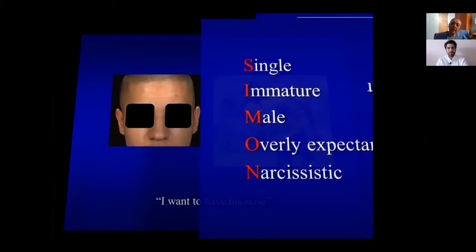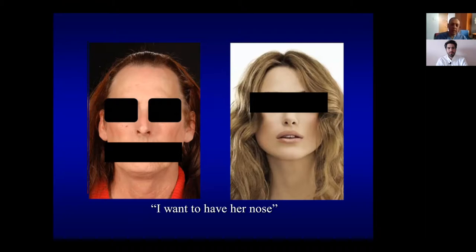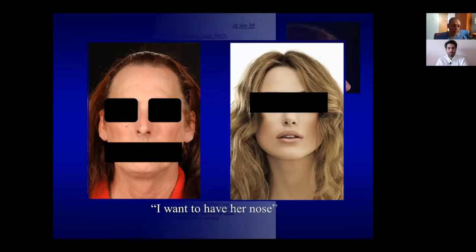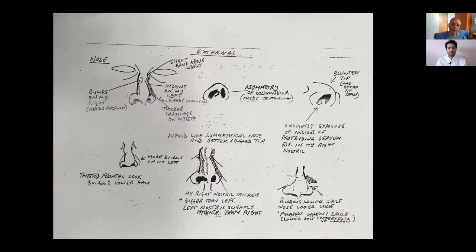For example, one patient of mine wanted to look like a certain footballer — he wanted that exact nose. Another male patient wanted to look like a specific lady, with her eyes and her nose. These are unrealistic expectations. Some patients write notes and send diagrams saying they want to look like a 1950s actress — Rita Hayworth or Ava Gardner. They have too much personal obsession and will never be happy.